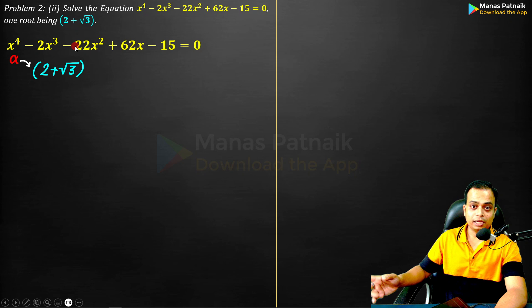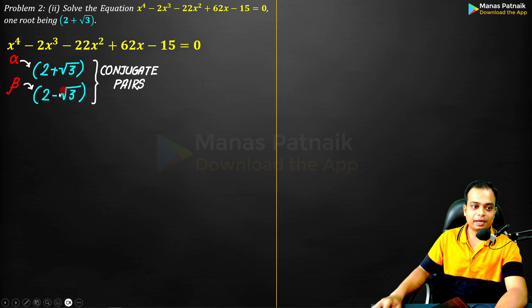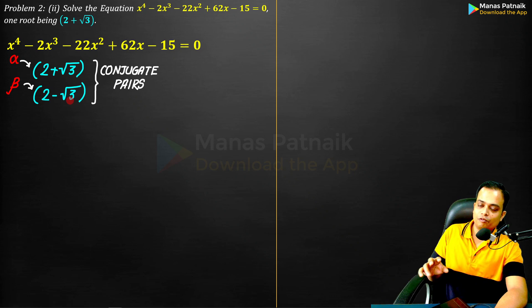Let's call it as alpha. So the other root, its conjugate pair, has got to be 2 - √3. Now we know two roots, and both of them are irrational.